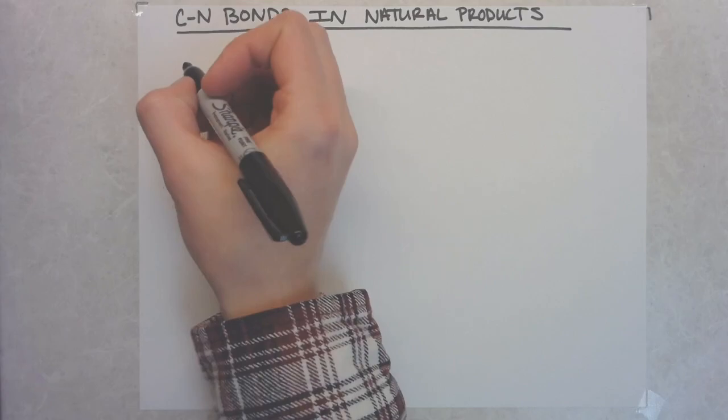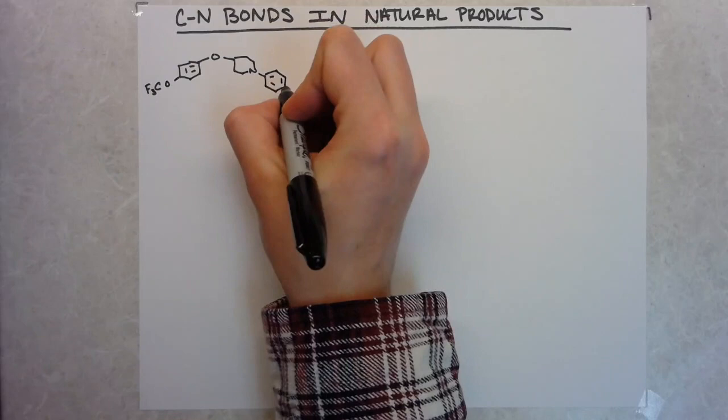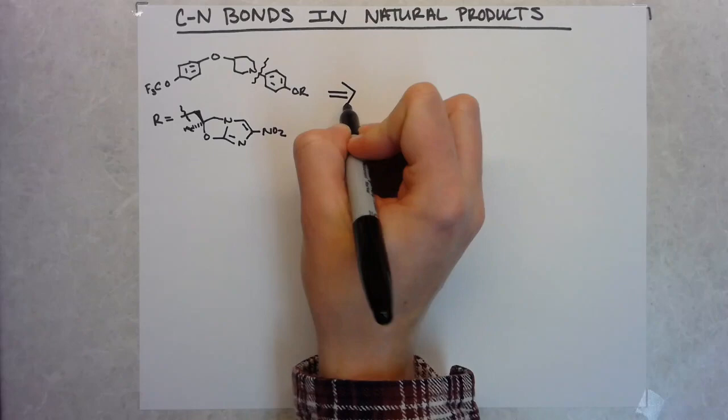So the formation of carbon hetero atom bonds is an important reaction for medicinal chemistry. If you look at many natural products, a lot of them have these carbon hetero atom bonds present, and that's one of the best ways to construct these complex natural products. So reactions that form carbon hetero atom bonds are really important, but are not necessarily developed to the point that they're always easy to make.